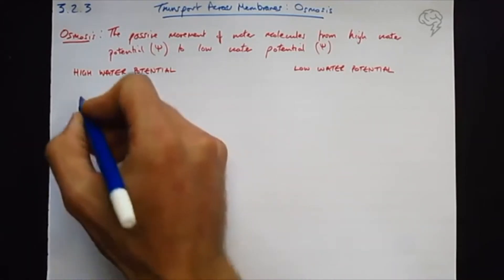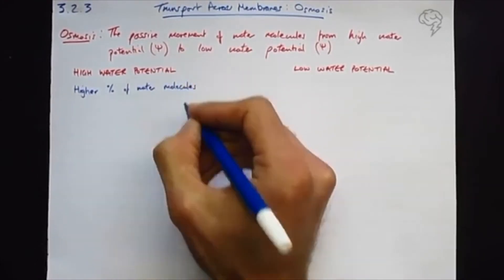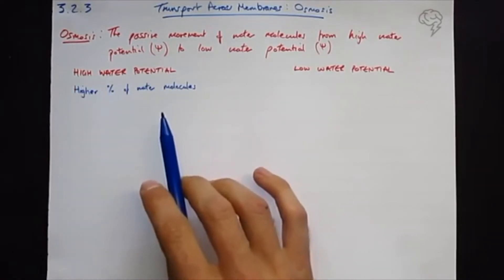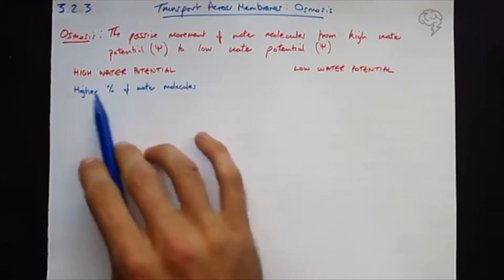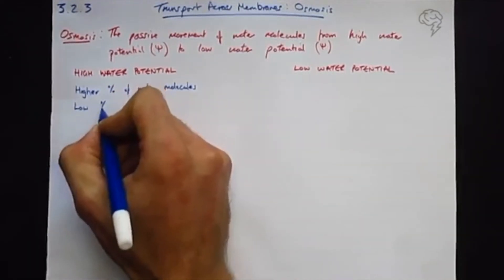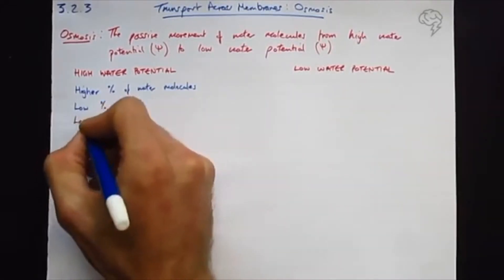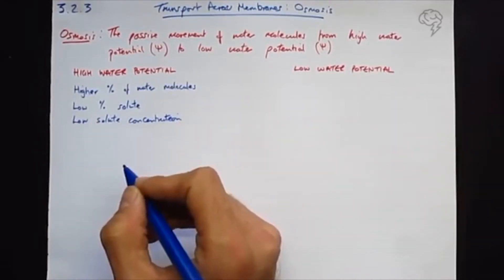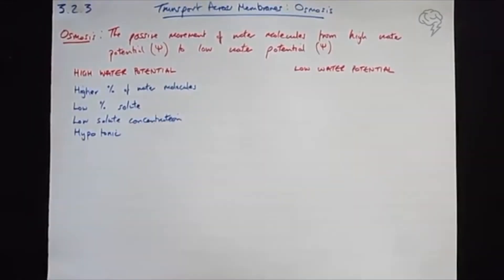So what do we mean by high water potential? Well, it has the higher percentage of water molecules. So basically pure water is 100% water molecules, zero percent other things. The things that we dissolve in a substance we call the solute. So 100% water molecules would be the highest possible water potential. It also would have the lowest percentage of solute, or we could say it's the low solute concentration. We could also say therefore that it's hypotonic - hypo means low, tonic means concentration.